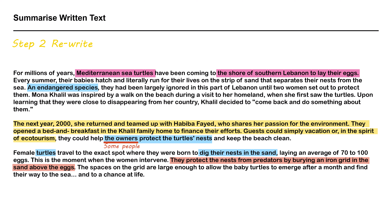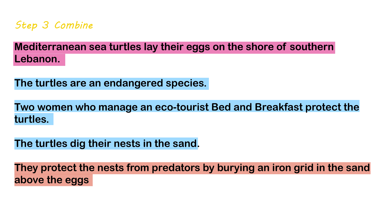Okay, now we can move on to step two: rewrite. I did not make it clear about 'some people.' So let's rewrite this. If you read a couple of sentences before 'some people,' you can find 'some people' is two women who manage an eco-tourist bed and breakfast. You can often find the clear meaning one or two sentences before an unclear meaning. And that is enough rewriting.